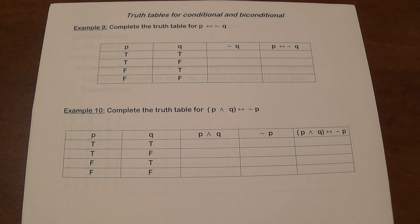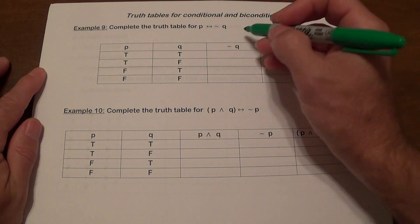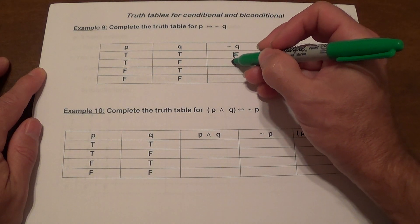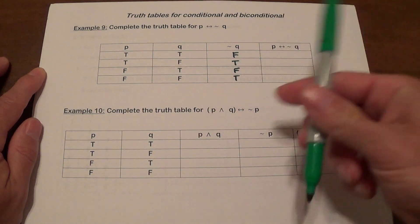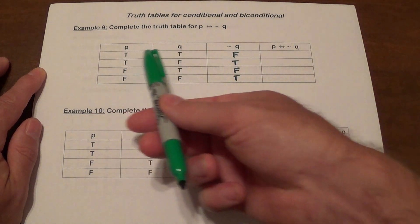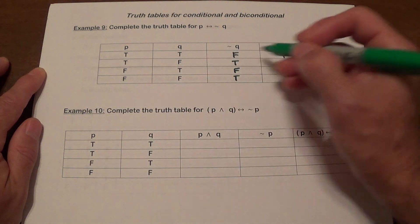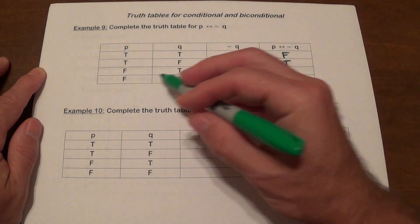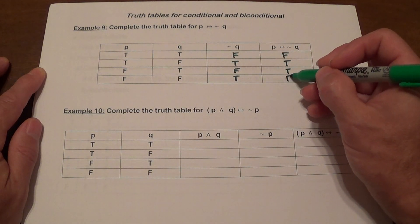Let's build the truth table for P↔¬Q. First, ¬Q = false, true, false, true. Then for P↔¬Q: true-false = false, true-true = true, false-false = true, false-true = false.